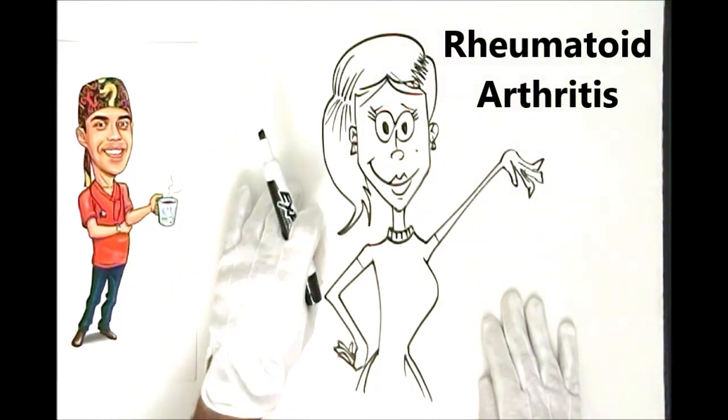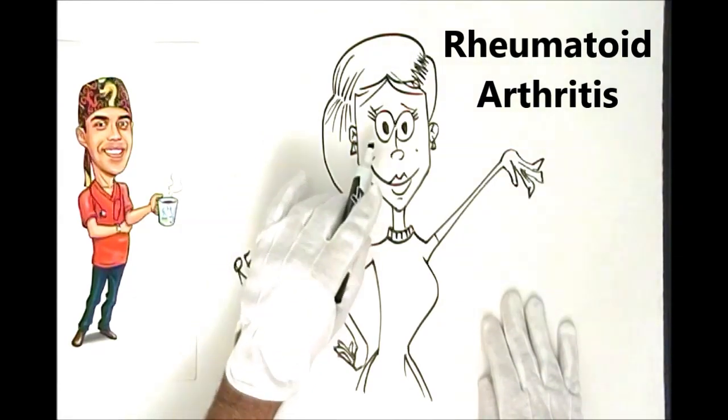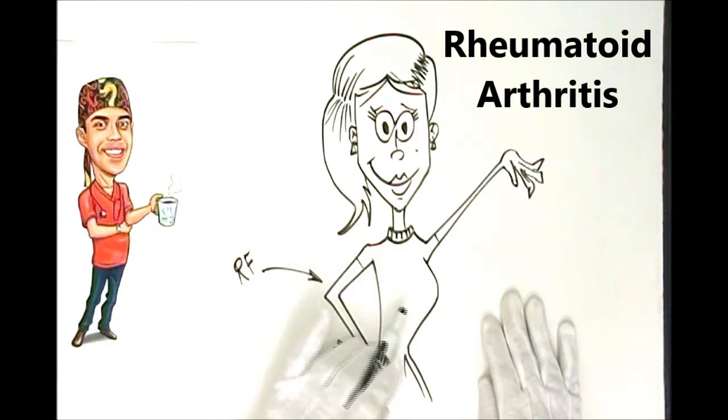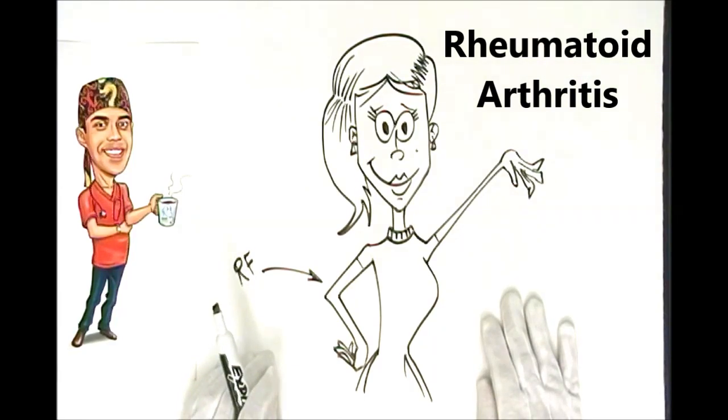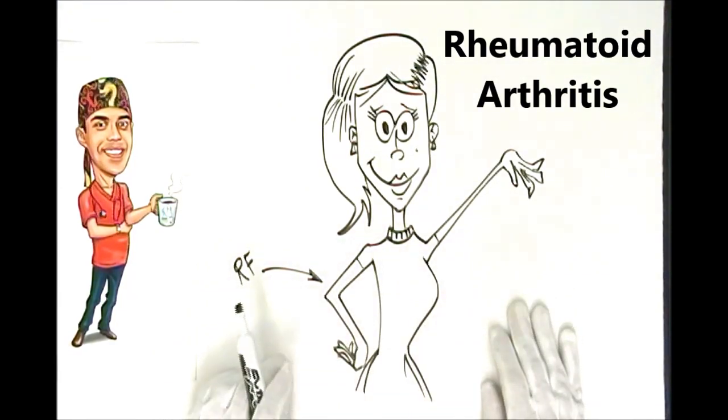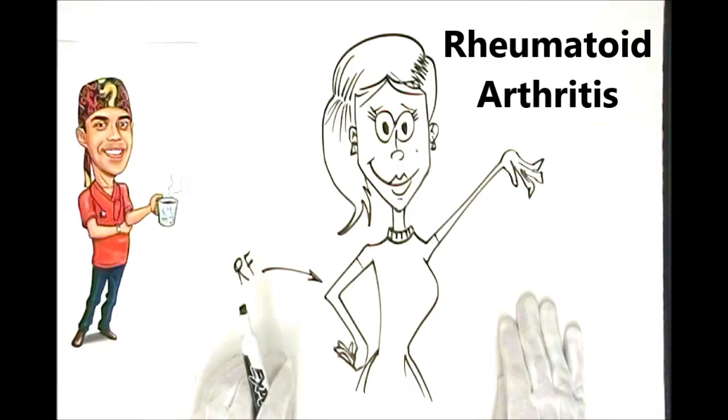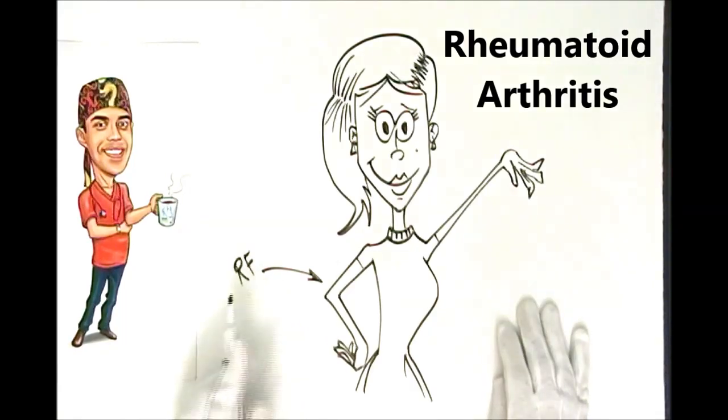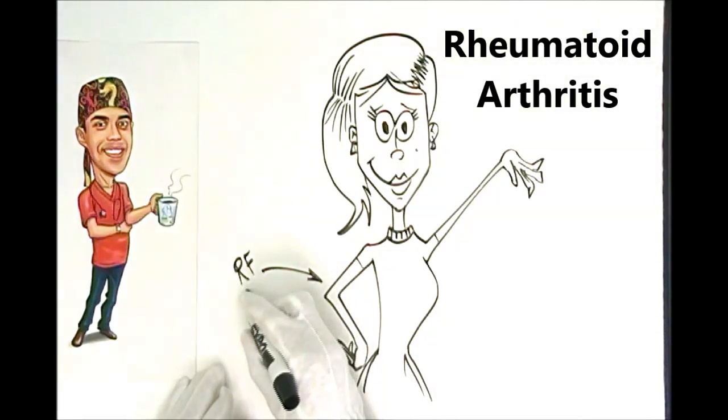Also, because I knew her, I knew that she had a chronic history of having dry eyes and that she also had some lung disease which was on testing a restrictive pattern. So tying that all together, I decided to send for lab work to check her uric acid level and to check for this thing called the rheumatoid factor.